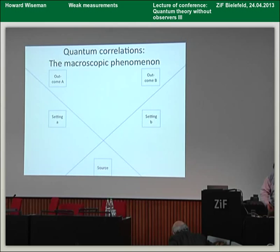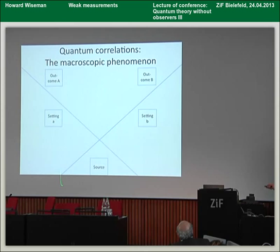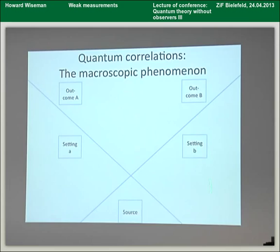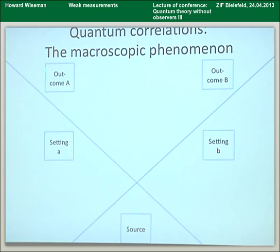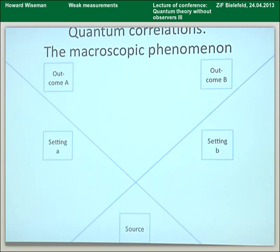These are the macroscopic phenomena that everyone is talking about. So we have — these obviously represent light cones — a source down here, Alice is over here and Bob is over here. Alice chooses, in Bell's notation, different settings and gets an outcome over here, and the same with Bob with an outcome over there. And so we get these correlations in nature.